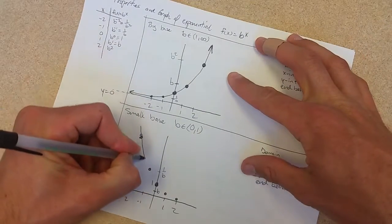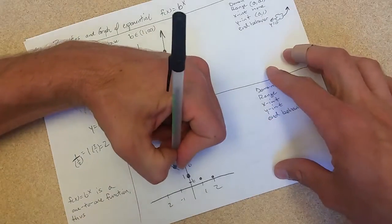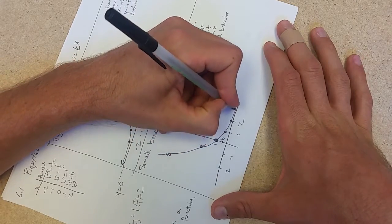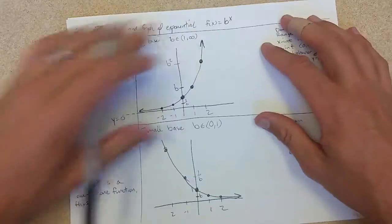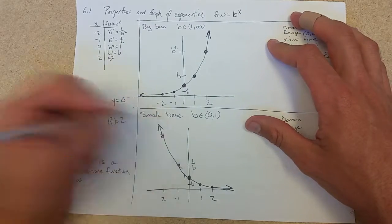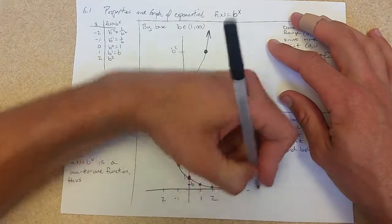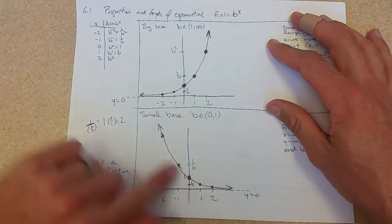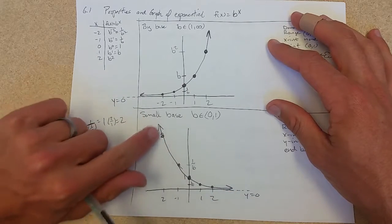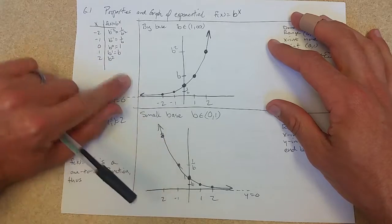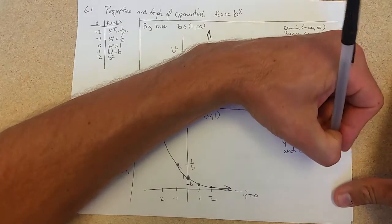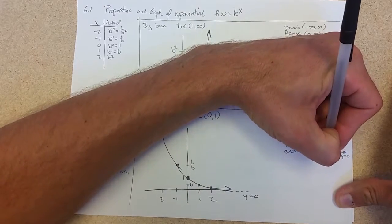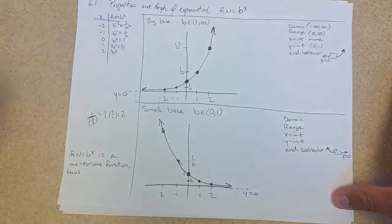And we're going to do the same thing, connect these together. It's going to be very similar to what we got on the first example. Smaller and smaller going to the right. On the left, we're going to approach positive infinity. So let's do our end behavior first.